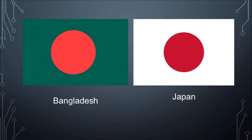My last combination of flags is Japan and Bangladesh. Both of them have a red circle in the middle. The only difference is the background color — it is green in the Bangladeshi flag and white in the Japanese flag. Interesting, isn't it?